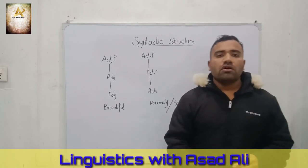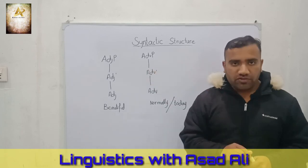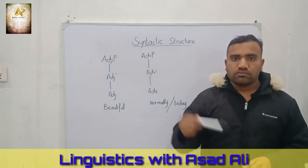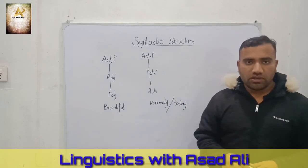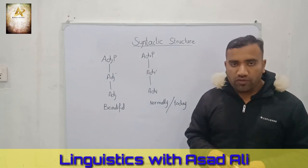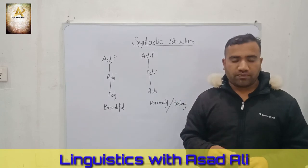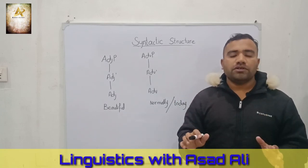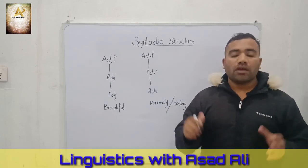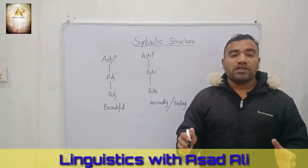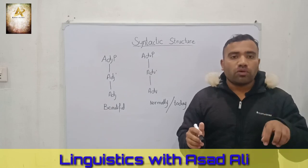In this video we have discussed five types of grammatical categories: first, noun phrase; second, verb phrase; third, prepositional phrase; fourth, adjective phrase; fifth, adverb phrase. We have completed the structure of these grammatical categories. Thank you — if you have any questions, you can comment and ask a question.